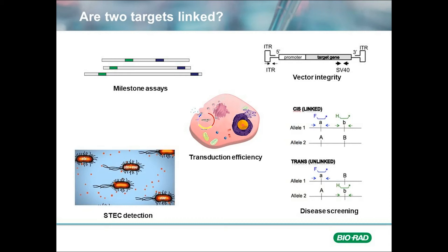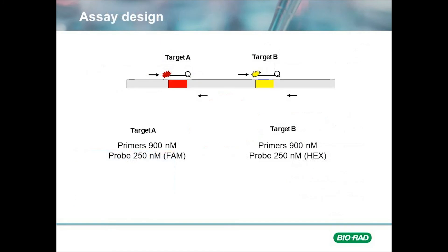How can we determine if these events are proximal and distal using droplet digital PCR? It is a combination of chemistry and statistics. The chemistry side of things is well established, as the design of a linkage assay is relatively straightforward. One would design two hydrolysis probe assays — one using a FAM-labeled probe for the first target and the second using a HEX or other dye for the second target. Primer concentrations are typically kept at 900 nanomolar and probe concentrations at 250 nanomolar.